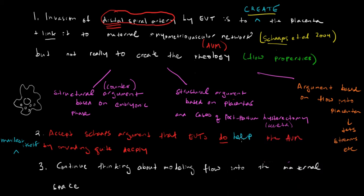Hello, this is David. In this clip, I want to make the case that the teleology, the purpose of the invasion of the distal spiral arteries by the extravillus trophoblast, is really to create space for the placenta to grow.